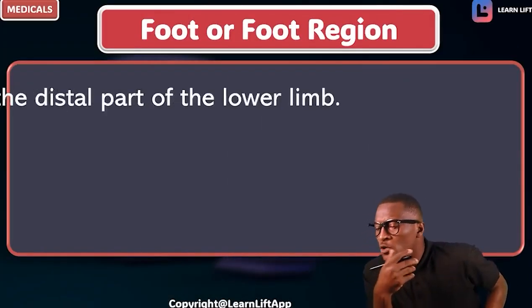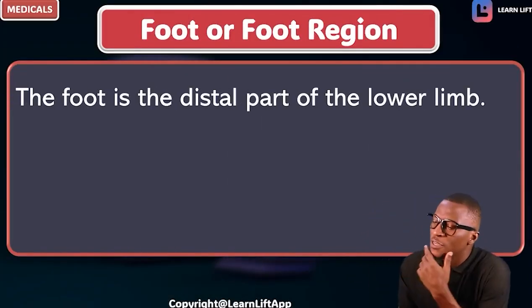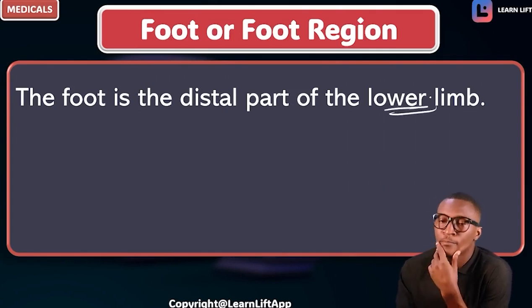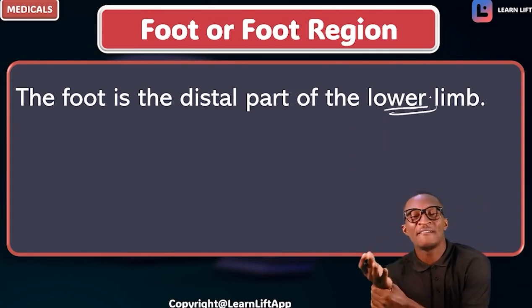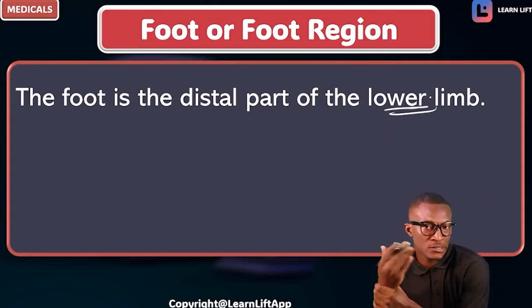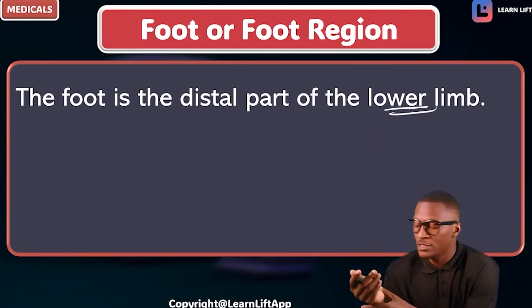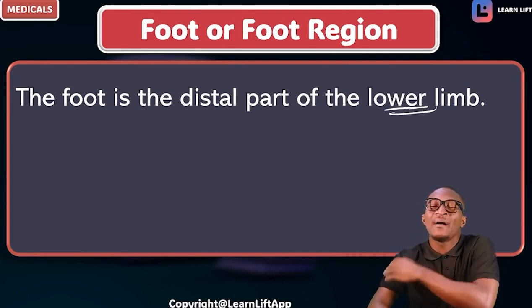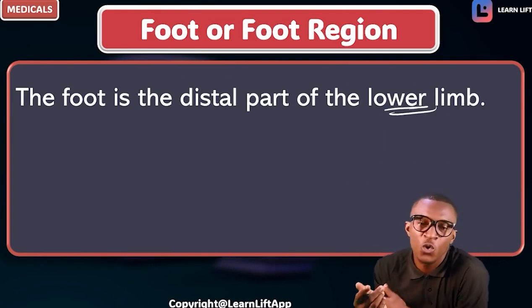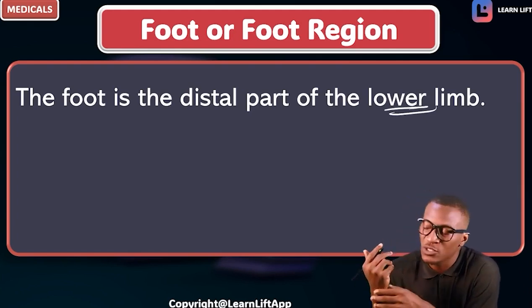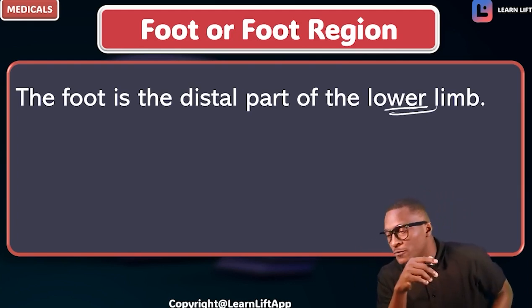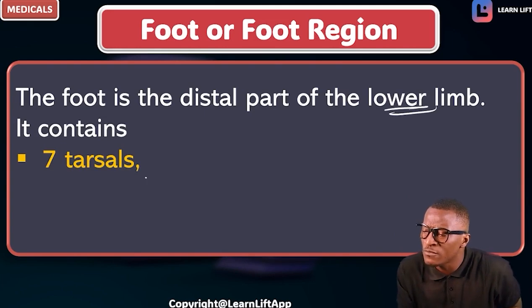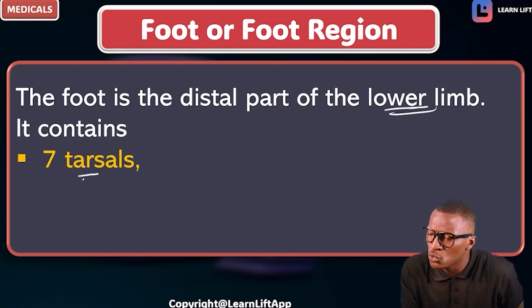Now let's go to the foot region. The foot is the distal part of the lower limb, just as we have the hand for the upper limb. Take note that the foot consists of seven tarsal bones, five metatarsal bones, and 14 phalanges — the toe bones.